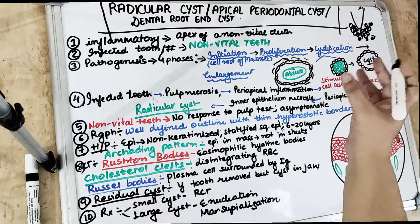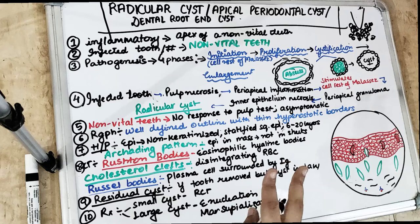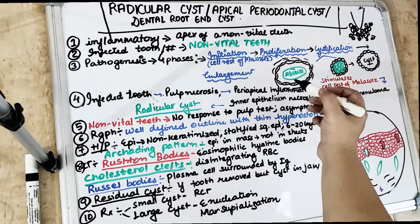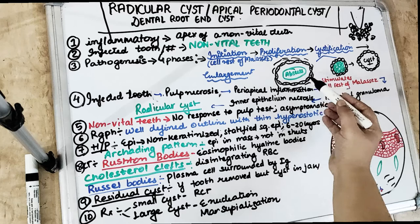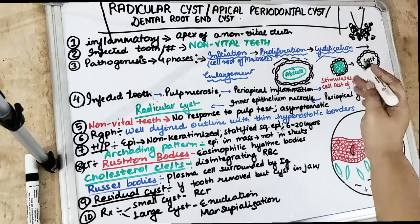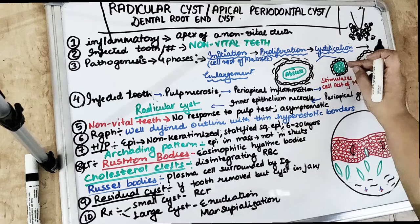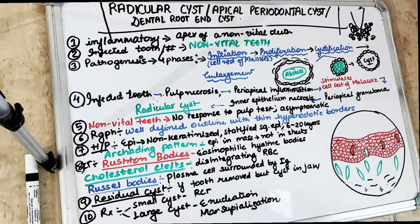Phase three is cystification. When the cells multiply near the periapical area, a cyst forms. There are two concepts: the first is that an abscess cavity forms in connective tissue and is lined with epithelial cells. The second is that because so many cells proliferate near the periapical area with no nutritional supply to the center, the central cells die and undergo necrosis, forming the cyst.